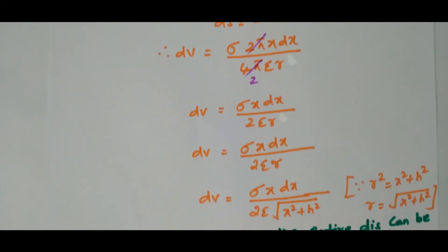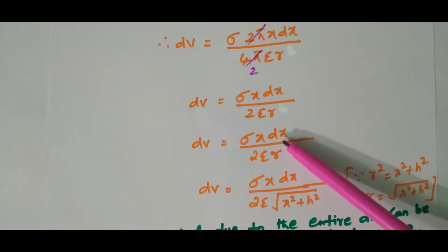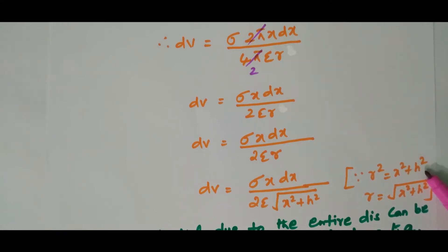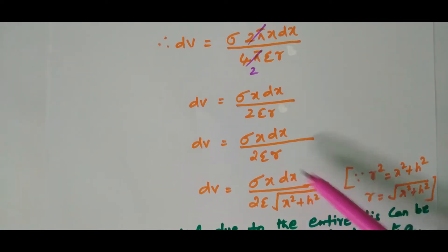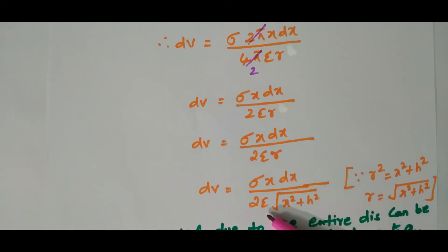So dV equals sigma x dx divided by 2 epsilon r. From the triangle, using the Pythagorean theorem, r squared equals x squared plus h squared, so r equals the square root of x squared plus h squared. Substituting this, dV equals sigma x dx divided by 2 epsilon times the square root of x squared plus h squared.